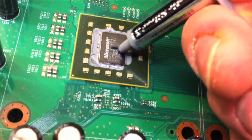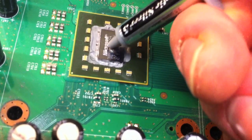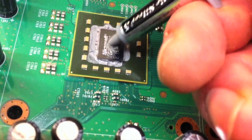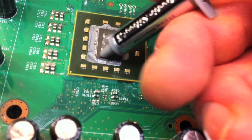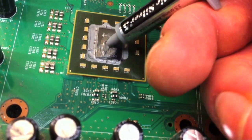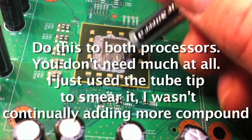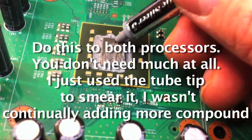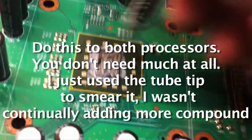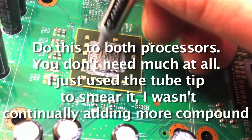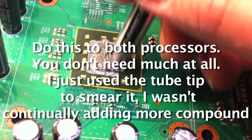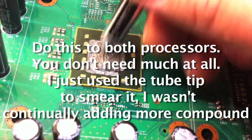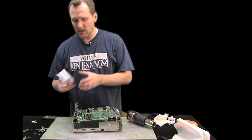So we'll squeeze it out of the tube onto the surface and just kind of smear it around. And so what we're going to do is put the heat sinks back on.